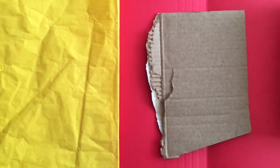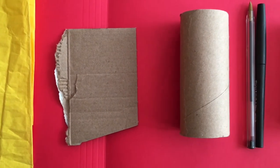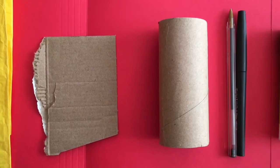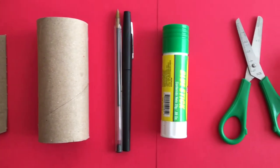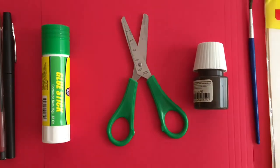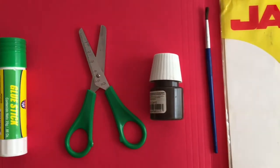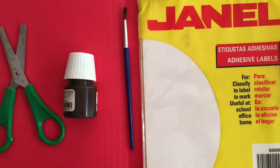We need yellow paper, a piece of paperboard, a toilet paper roll, a black pen or black marker, glue stick, scissors, brown paint, a paintbrush, and adhesive labels or a white sheet of paper.